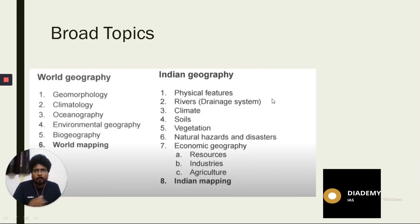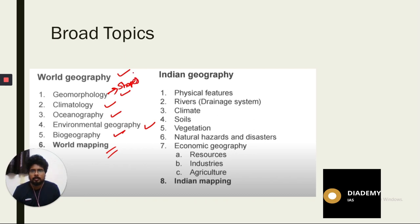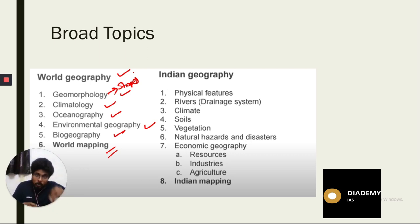Looking at the syllabus broadly, in world geography the important topics are geomorphology, climatology, oceanography, environmental geography, biogeography, and world mapping. Geomorphology basically deals with the shapes present on the earth — 'geo' means earth, 'morpho' means shape — it is the study of different shapes on the earth's surface.